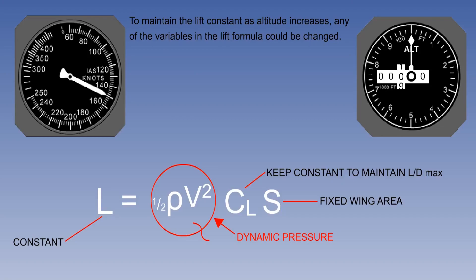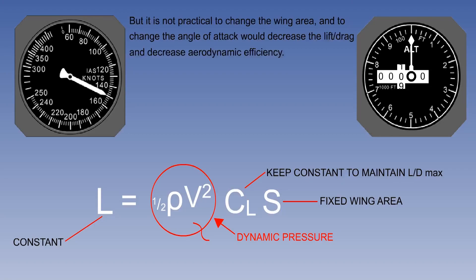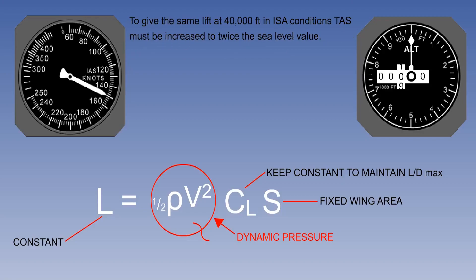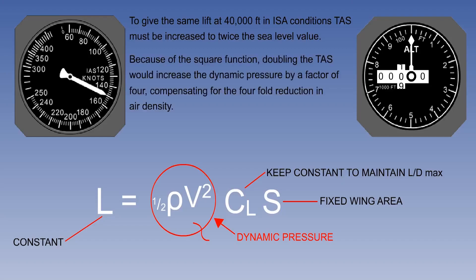To maintain constant lift as density decreases, any of the elements of the equation could be changed. But it is impractical to change wing area and inefficient to change CL from the best lift-drag ratio at 4 degrees angle of attack. So, since the dynamic pressure must be maintained, if one element drops, the density, the other, the TAS, must rise, in this case to twice the sea level value. Because of the square function of the TAS, doubling it would increase dynamic pressure by 4, compensating for the 4-fold drop in density.